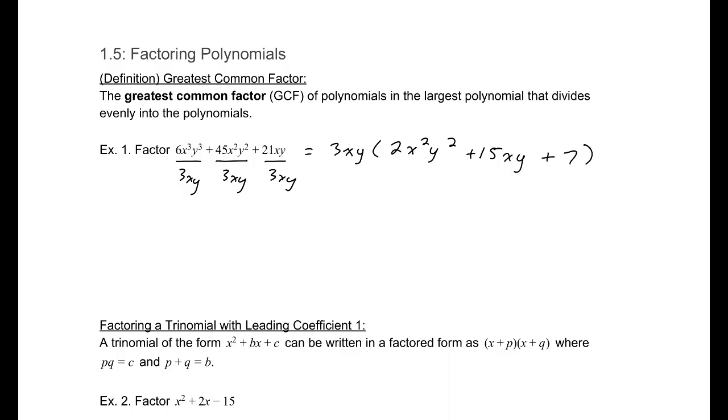So factoring, when you see that direction, what the intention there is, is you are writing whatever it is you're given, your polynomial, you're writing it as a product of two things. We're trying to write it as the simplest product. We're breaking it down, kind of like prime factorization. Now if I give you a number, like 21, and I write it as 3 times 7, that's a product that is a simpler form of the same thing.